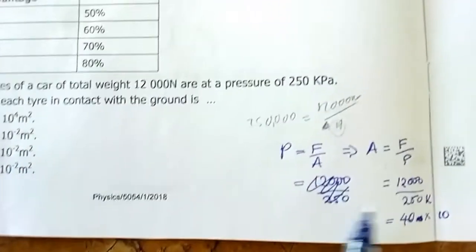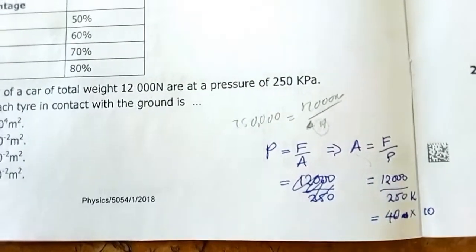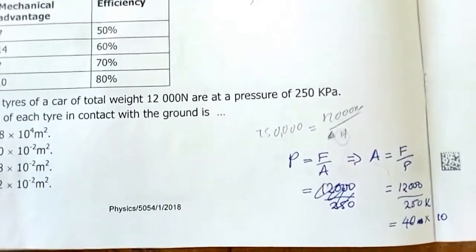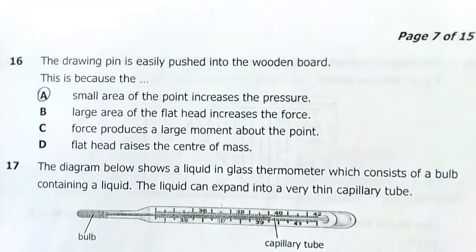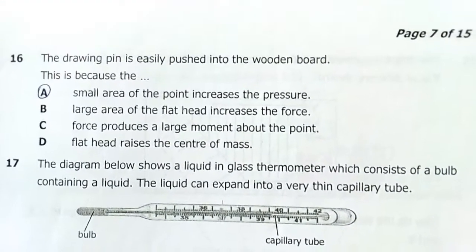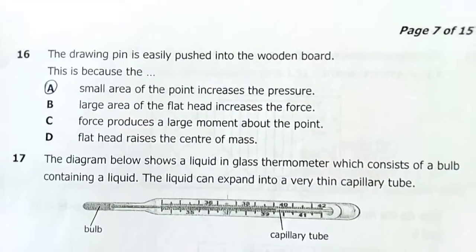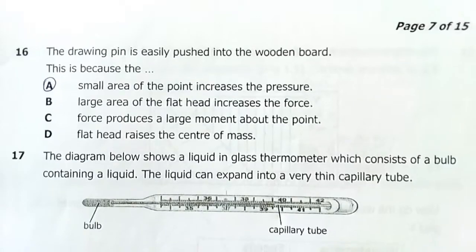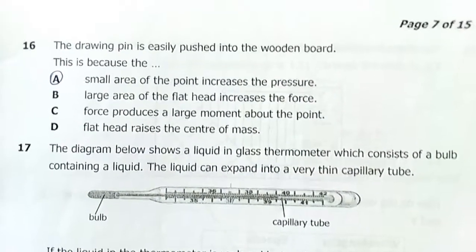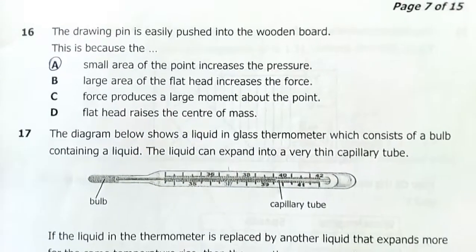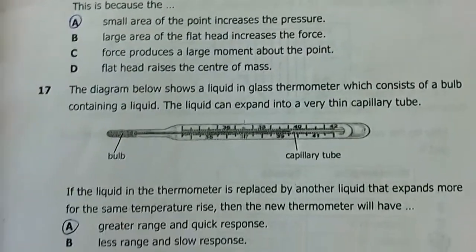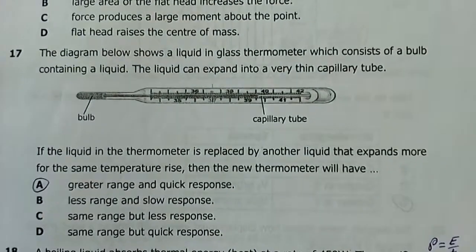Question 16: A drawing pin is easily pushed into a wooden board because the small area of the point increases the pressure. Answer is A.